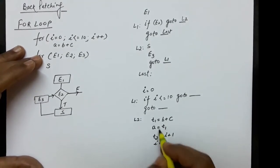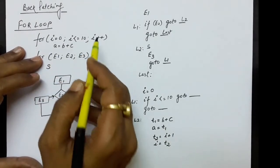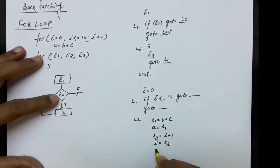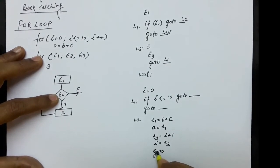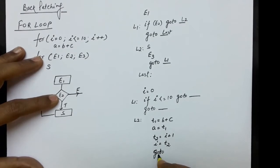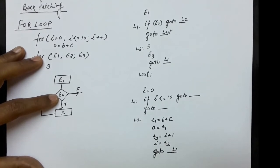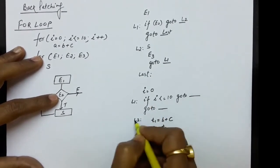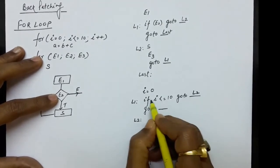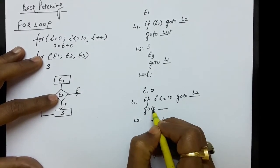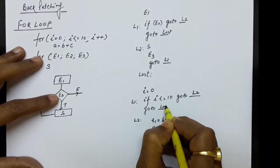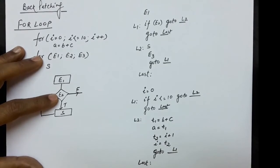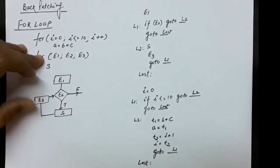After executing A = B + C and the increment, we go to check the condition again, which is at level L1. So we write go to L1. Let's say this is the last level. In the backpatching: if i <= 10 the condition is true, we come to L2; if the condition is not true, we go to last. This is how you write three-address code for for loops.